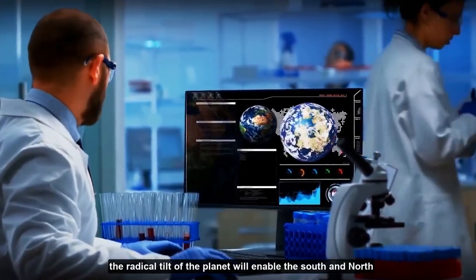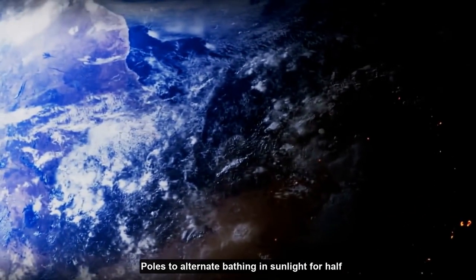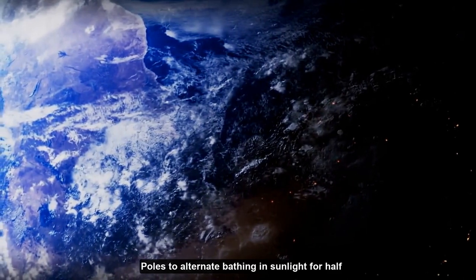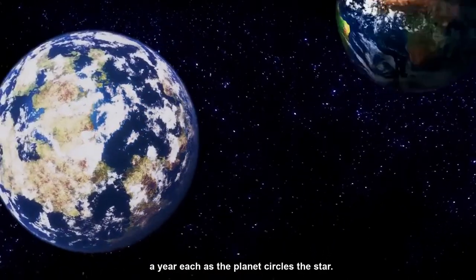Moreover, the radical tilt of the planet will enable the south and north poles to alternate bathing in sunlight for half a year each, as the planet circles the star.